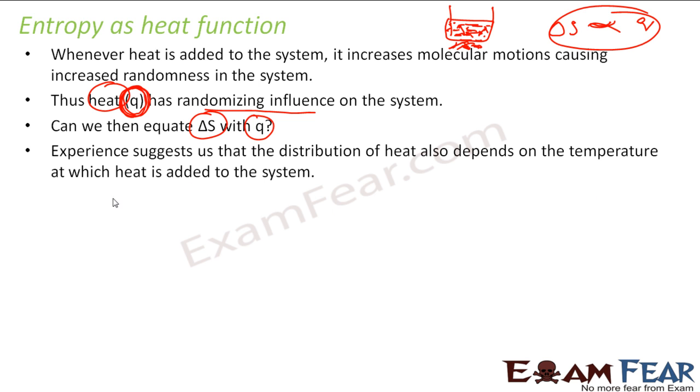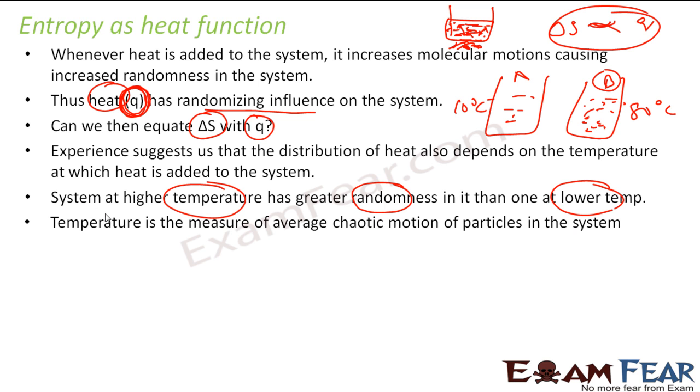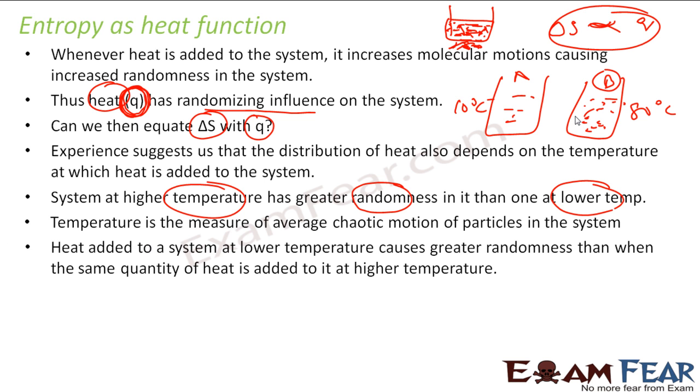Experience also suggests based on experiments that the distribution of heat also depends on the temperature at which the heat is added. That means a system with higher temperature has greater randomness in it than one at lower temperature. If I have two beakers with same substance, this one is 10 degrees Celsius and this one is 80 degrees Celsius. The 80 degree Celsius beaker will be having more heat transfer, it will be more random. The randomness of the molecules will be more at 80 degrees Celsius.